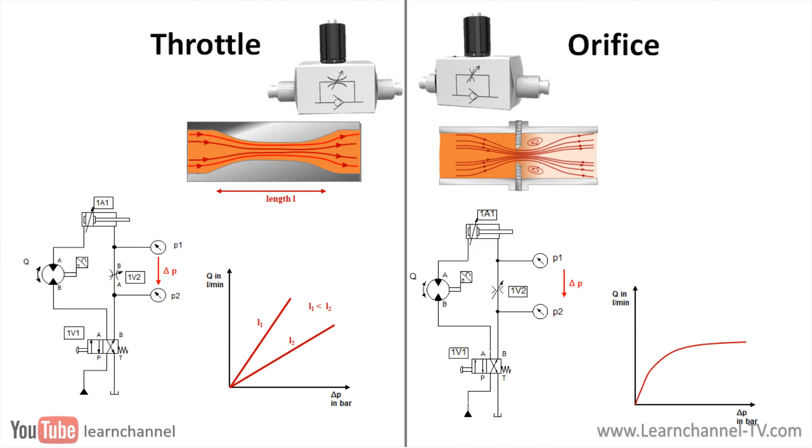An orifice is simply a disk with a hole. So, in contrast to a throttle, the ratio of length compared to flow diameter is very small, resulting in different behavior within the hydraulic circuit.